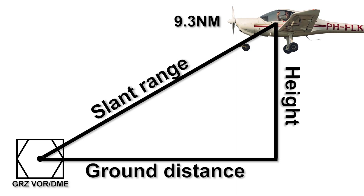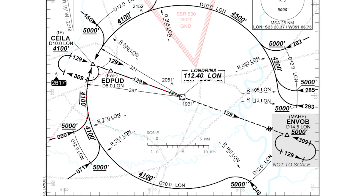DMEs are often associated with the VOR — the so-called VOR DME — but they can also be found as standalone systems. For a DME arc we'll be using a VOR DME. Now back to the arc. This is sometimes seen as a very difficult procedure to perform, but that's actually not true. It looks daunting, but that's mostly because the concept of an arc isn't always clear. You can't look at an approach chart, see a DME arc for the first time, and immediately fully understand how to fly it.